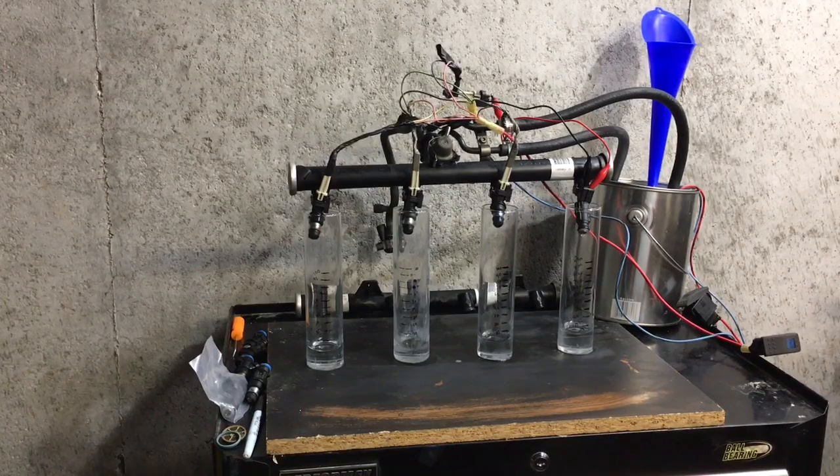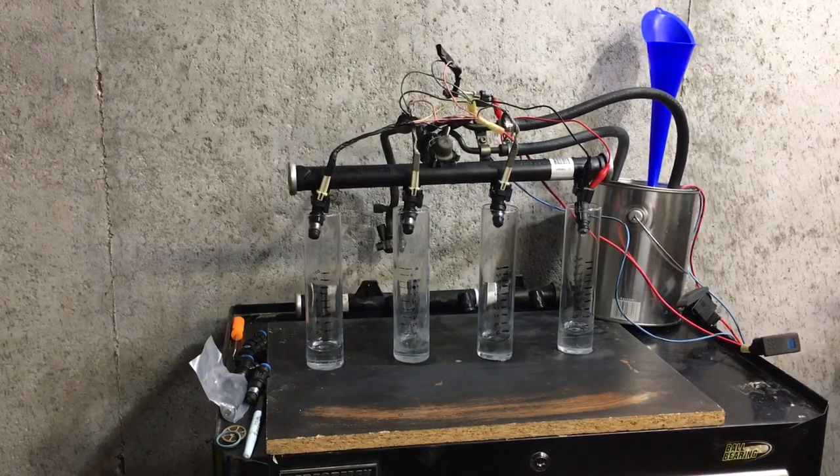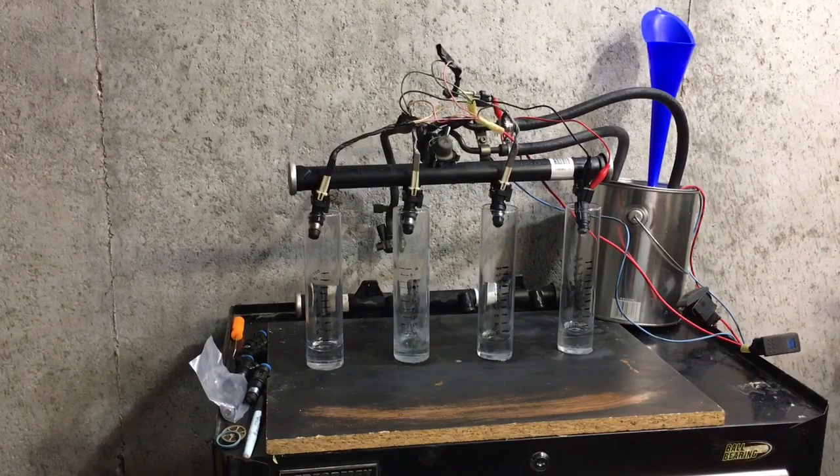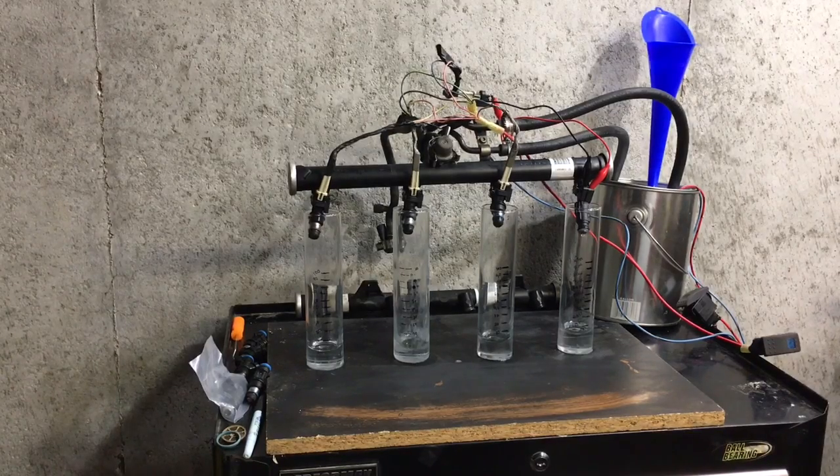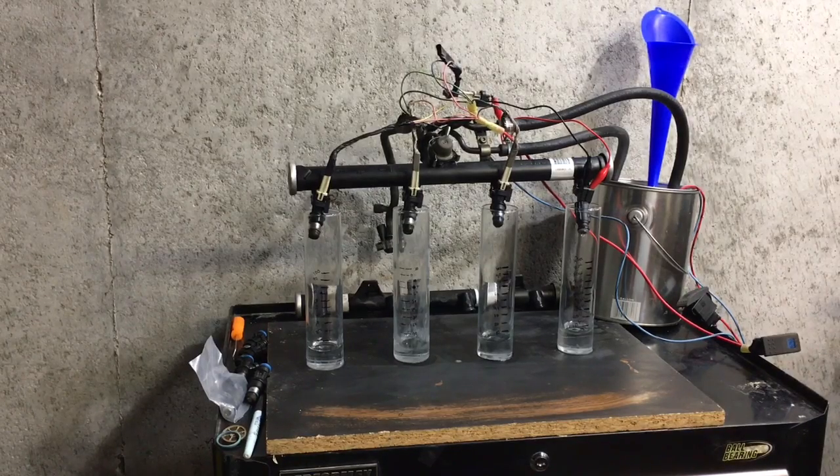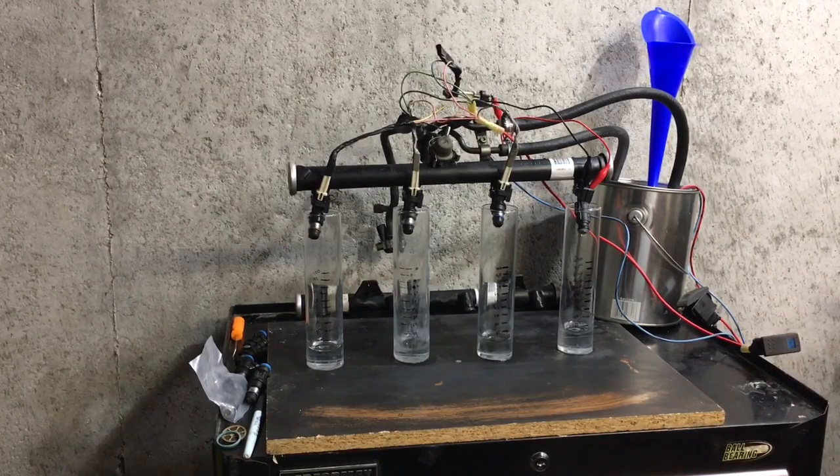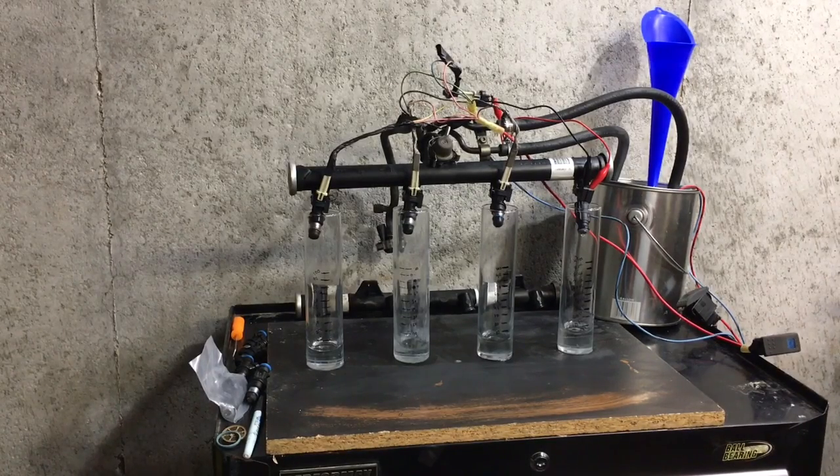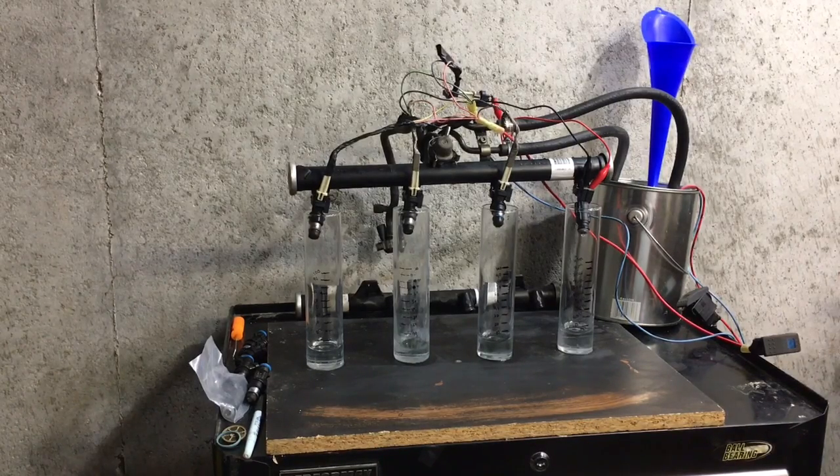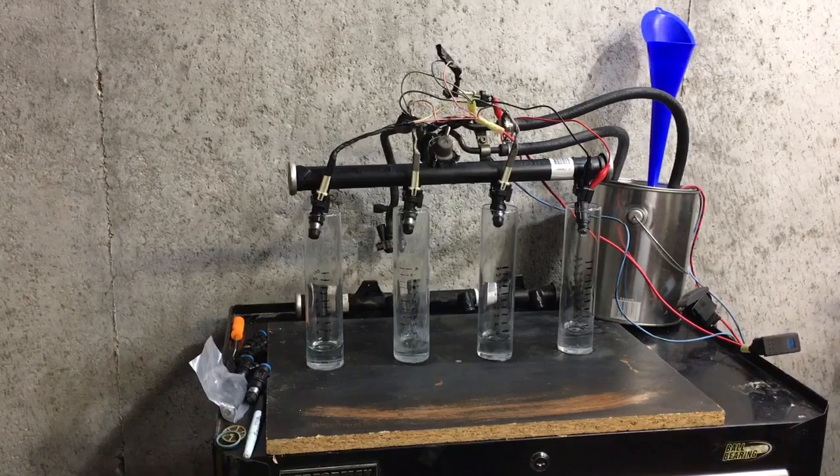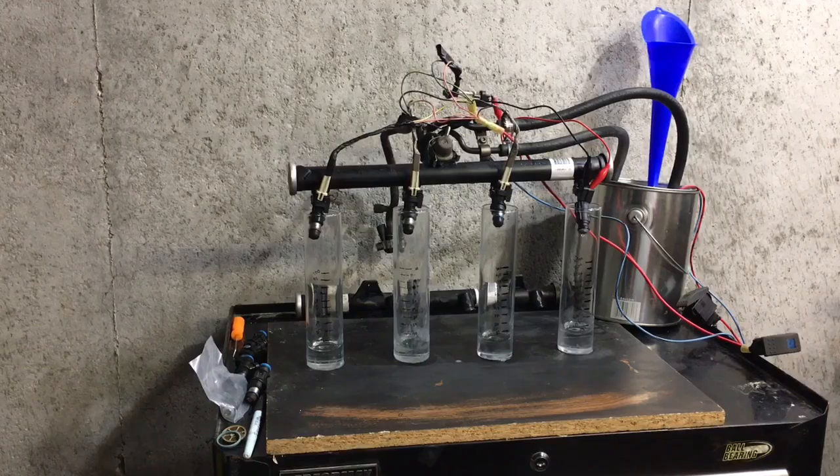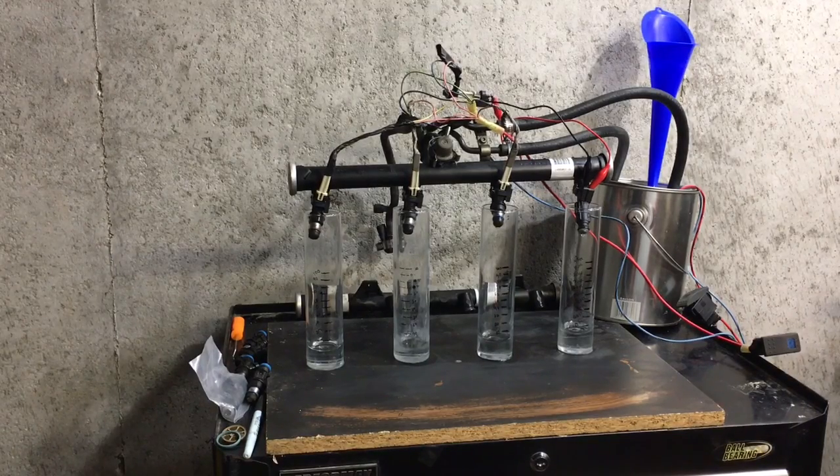The far left, beaker number one, is a factory truck injector two-hole cap. Next to it is a factory truck injector four-hole cap. Next to it is a factory two-hole injector that's been decapped. Finally on the end is an eBay Siemens Deka knockoff, which many people have said online do not run.